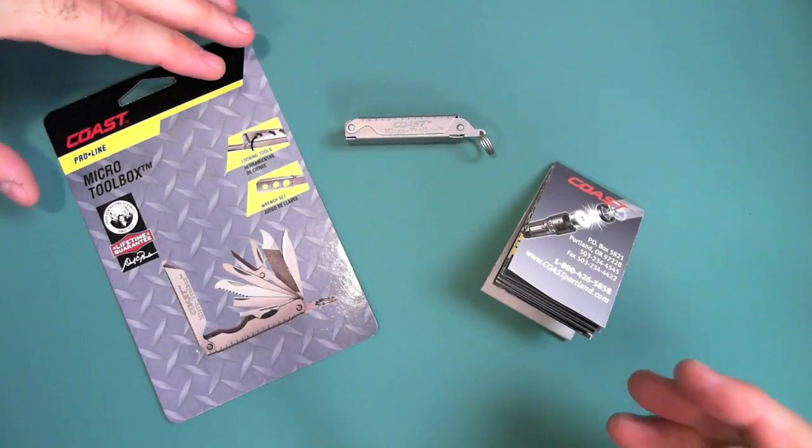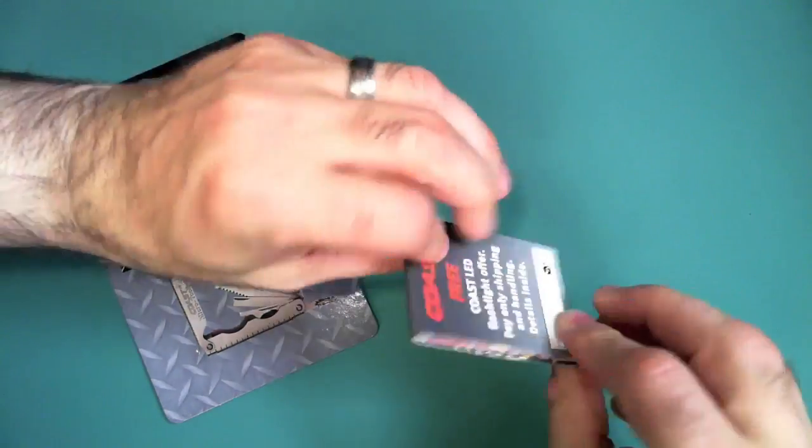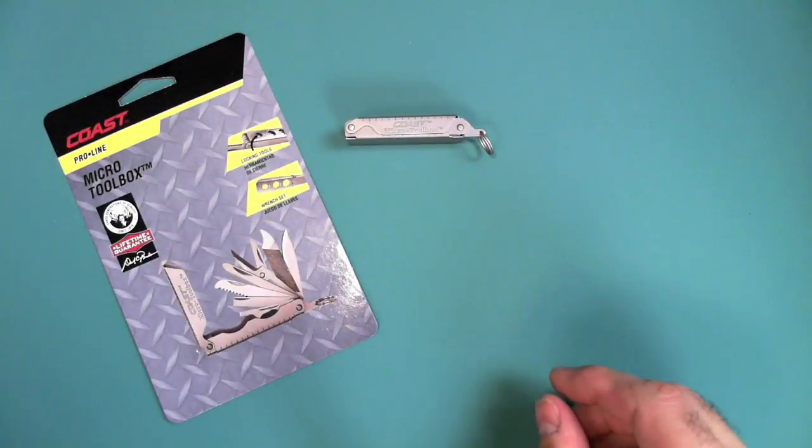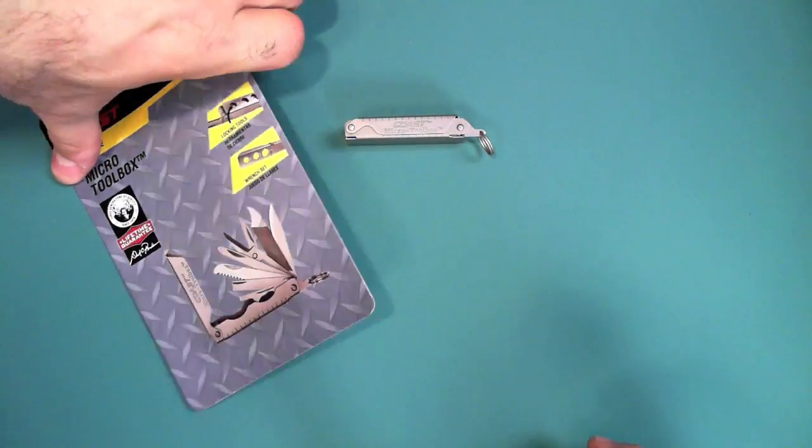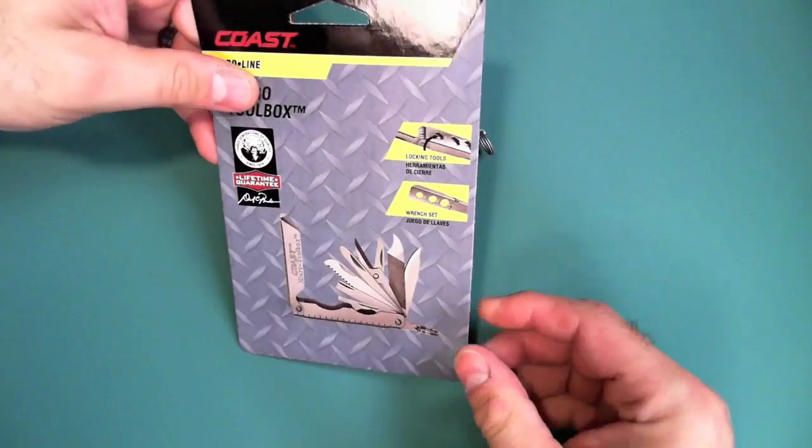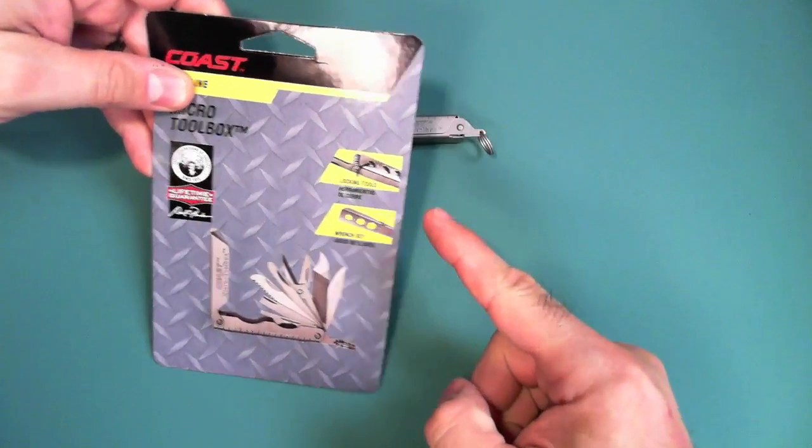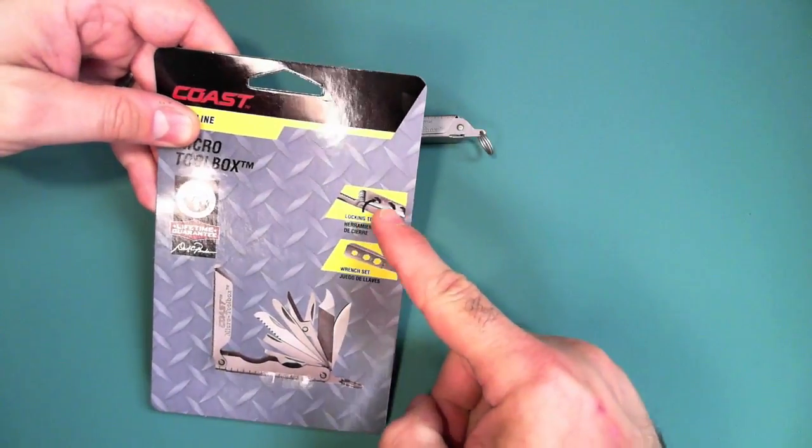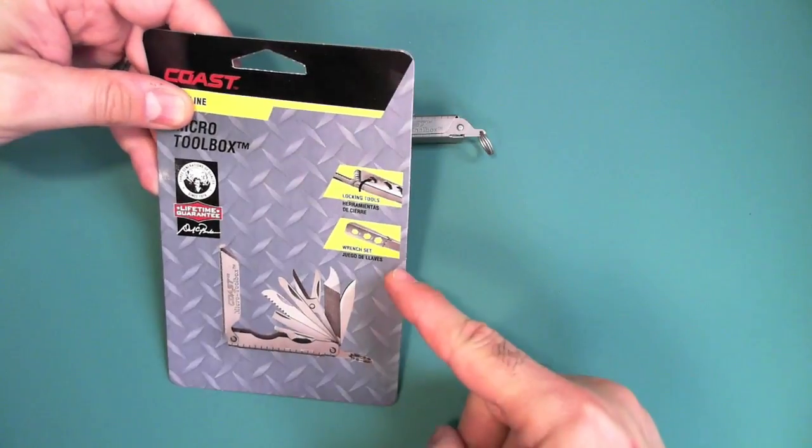Here's everything that came in the blister pack. You get a catalog. And I'm not going to waste time with that. And this is the literature that basically tells you that these tools can lock. And I'll explain that in a minute.